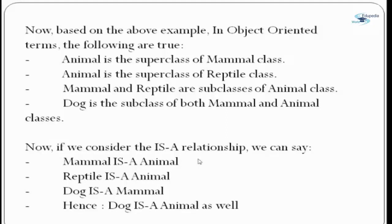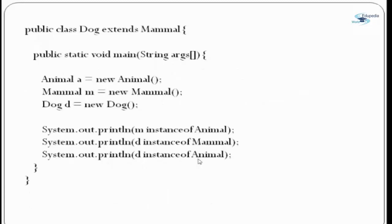Considering the IS-A relationship: Mammal is an Animal — true. Reptile is an Animal — true. Dog is a Mammal and hence Dog is an Animal as well. I hope you got the concept of the IS-A relationship.